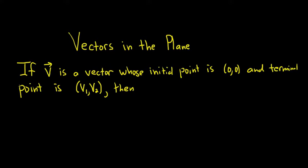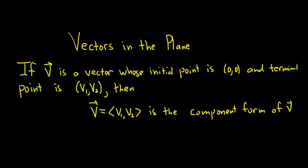Then we say that v, given by angle bracket v1 comma v2 angle bracket, is the component form of the vector v. So if you have a vector that's written in this way, we say it's written in component form.